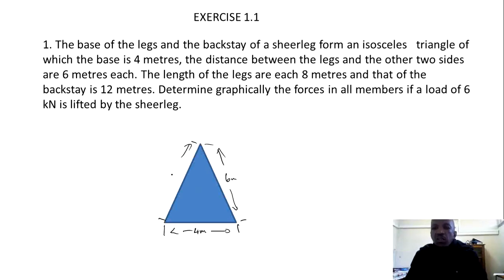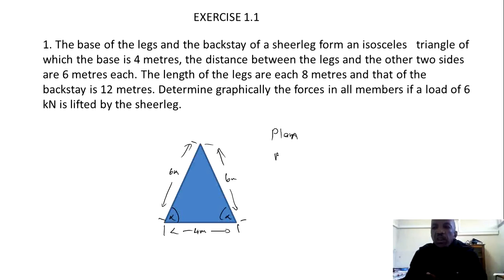As we know from geometry, if two sides are equal, their angles will also be equal. The first step is to make a plan. We start with the plan, which is the top view, and then the method is whereby we lift the Shell Leg to produce our side view.